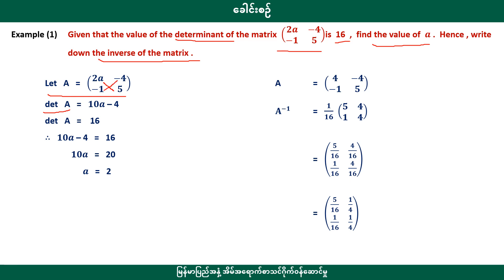10 minus 4 is equal to 16. By changing the system, 10 minus 4 equals 16. This is equal to 20. 4 minus 4 minus 15 is equal to 16. This is equal to 10.